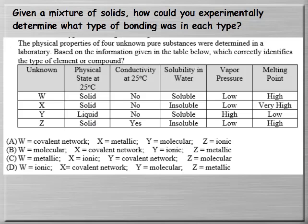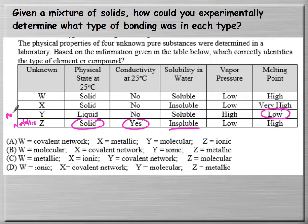To identify unknown solid types from data: if a solid is conductive, it must be metallic since it's the only solid that conducts. A substance that is liquid at room temperature has the lowest melting point, corresponding to a molecular solid. So Z is metallic and Y is molecular.